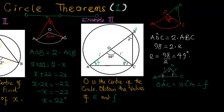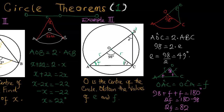The three angles of triangle AOC add up to 180 degrees: 98 + f + f = 180. So 2f = 180 − 98 = 82, and dividing both sides by 2 gives f = 41 degrees. So this is how the theorem works: the angle subtended by an arc or a chord at the center of a circle is twice that which it subtends at the circumference.